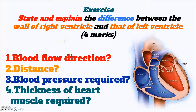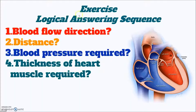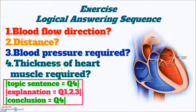So how can we construct the answer and explain? We are going to use the four guiding questions: blood flow direction, distance, blood pressure required, and thickness of heart muscle required. By these four steps, we can construct the logic easily. The logical answering sequence is: blood flow direction, distance, blood pressure, and then thickness.